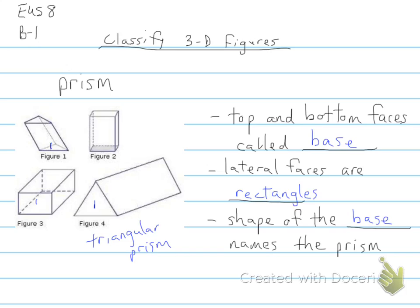Whereas this one and this one, the shape is rectangular. It's a rectangle, so these would be rectangular prisms.